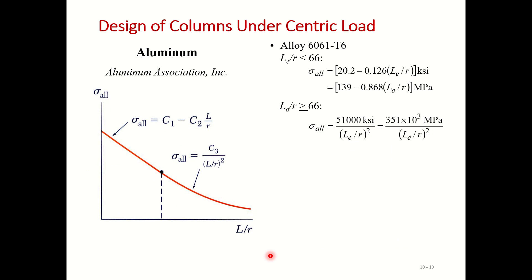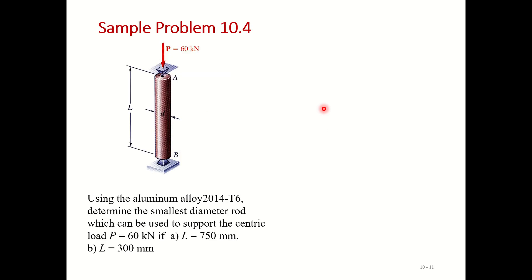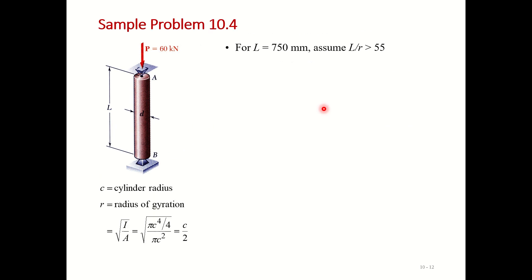For aluminum, empirical data takes a specific form. For alloy 6061-T6 with L/r less than 66, one equation is used — with different coefficients for ksi versus megapascal units. For L/r greater than or equal to 66, a different equation applies. The same structure applies to other aluminum alloys. Simply find L/r and compute sigma allowable from the appropriate equation. Problems will be discussed later.